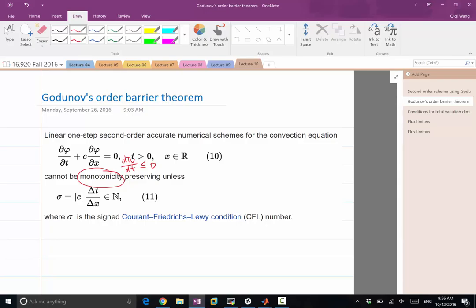Cannot decrease total variation unless the CFL number is integers, which can only be achieved everywhere if the C is a constant everywhere.